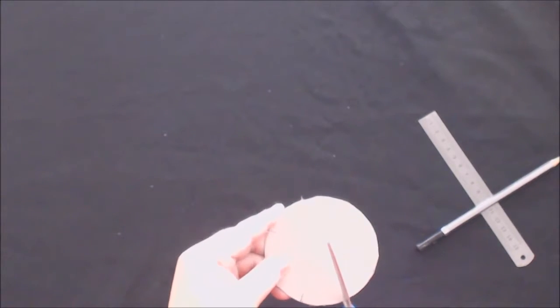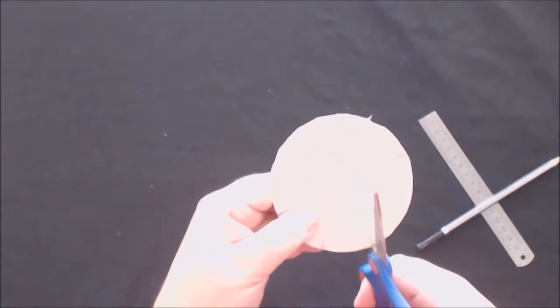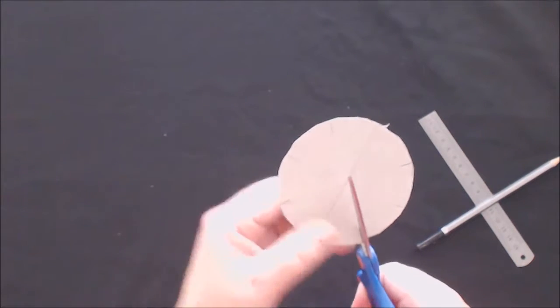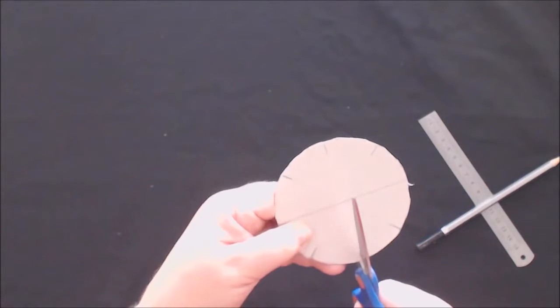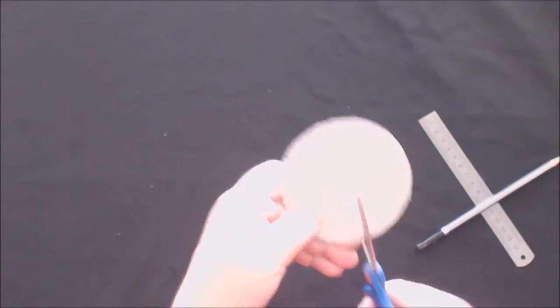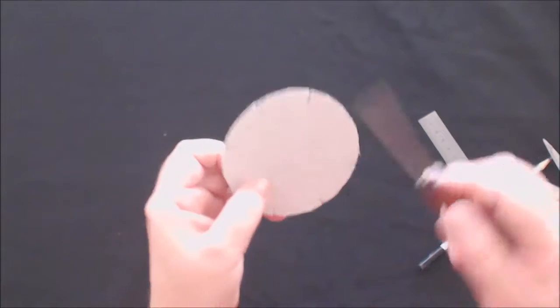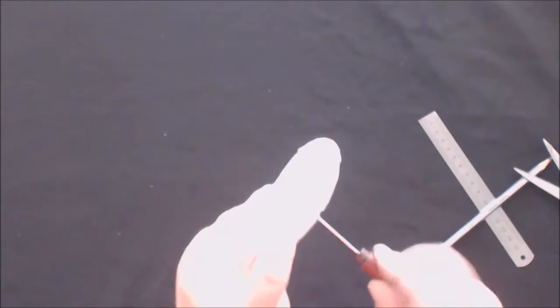Cut about half a centimeter into each piece of the circle. Make a hole right in the middle, big enough for 4 to 6 strings of the crafting lace to fit through.